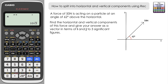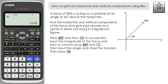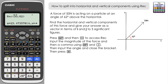Access the rectangular coordinate feature again — Shift then REC. It opens a bracket. Input the magnitude of the force, which is 50 newtons, then Shift and comma, then the angle of 62 degrees. Close the brackets and press equals, and here we have our two results.